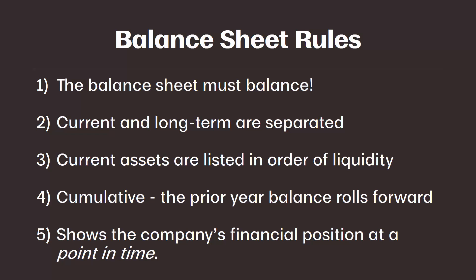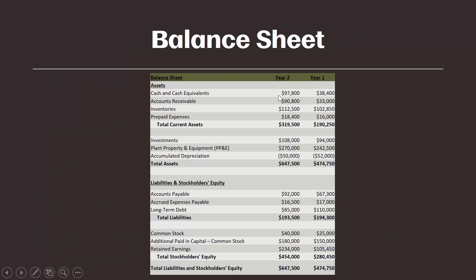Finally, our last rule states that the balance sheet shows the company's financial position at a point in time — as of a certain date, usually the quarter end or the year end. It is not showing us the change in balance over a period of time; it is showing us the ending balance at a point in time. Here on the balance sheet, this is the ending balance at the end of the most current year, and this is the ending balance in the previous year. We could calculate the change between these two balances, but here it is just showing us what the balances were at the end of each year.